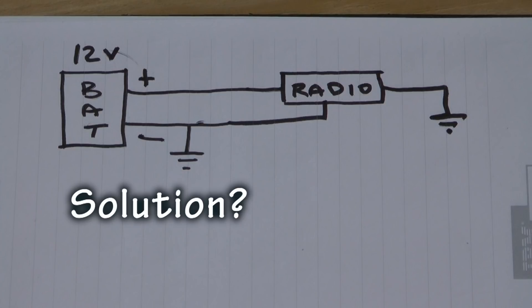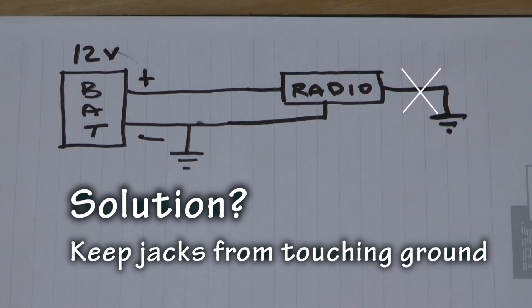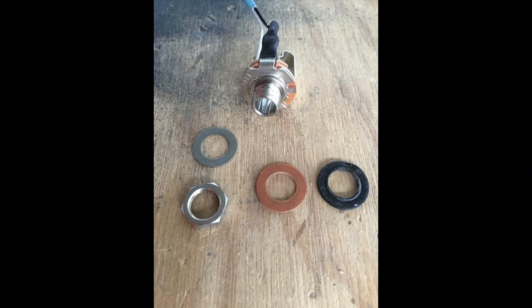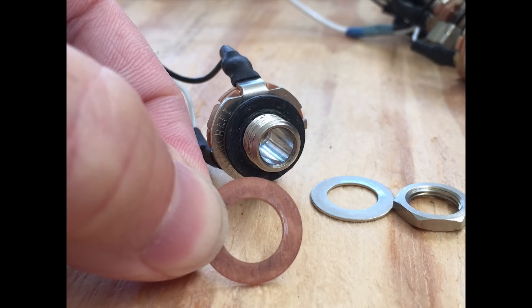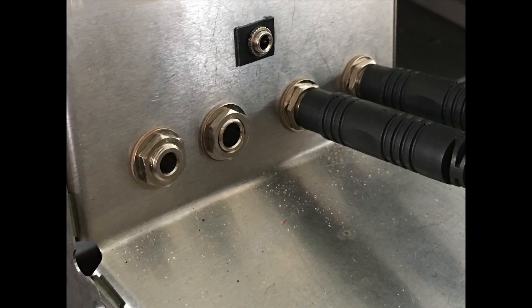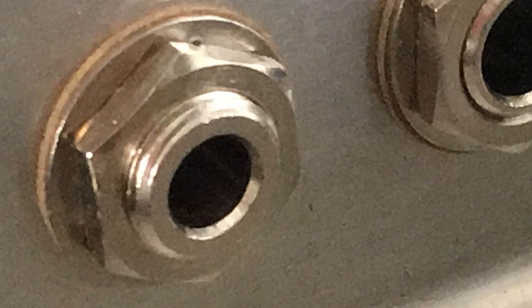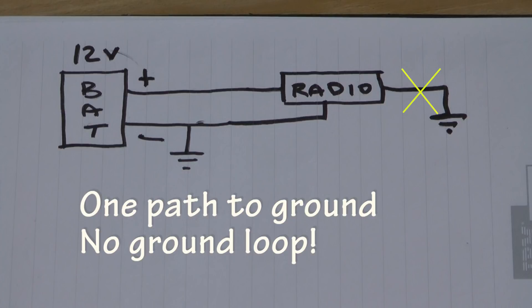The solution for eliminating this ground loop is easy. We simply need to make sure that these jacks do not touch the airframe and don't get electrically grounded when they are installed. You may already be familiar with the insulating washers needed when installing headset jacks. Place one washer on before installing the jack in the panel and one on the outside of the panel, and the jack's shield wiring will be insulated from the airframe, preventing a ground at that point. Each jack needs to be insulated like this. Usually these fiber washers come with audio jacks when you purchase them, but be sure to check. You have now eliminated a ground loop with this type of installation.